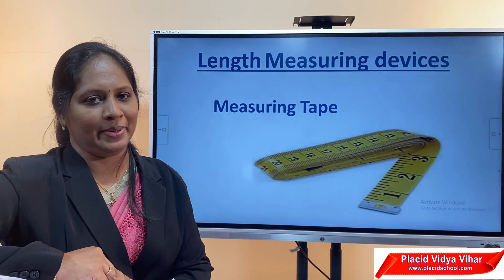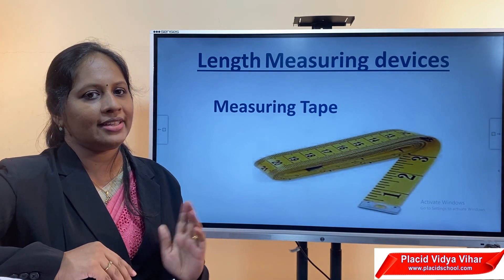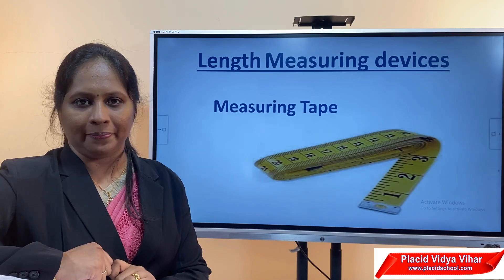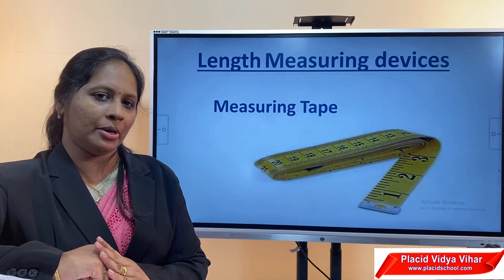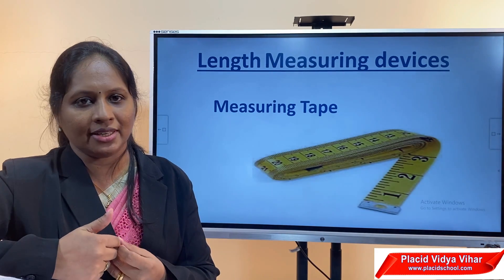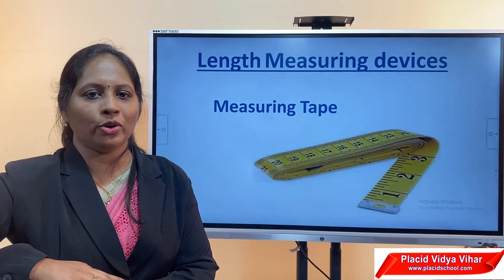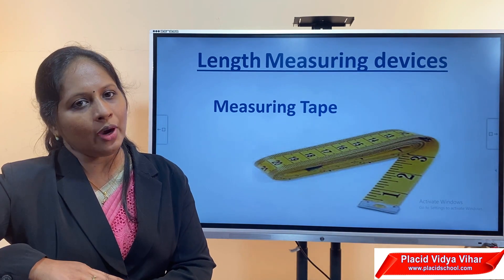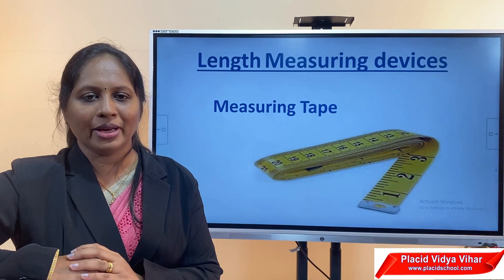This is a measuring tape, which is mainly used by tailors. What is the difference between the meter rod and the measuring tape? The meter rod is very rigid — you cannot bend it. But this measuring tape is flexible. So if you want to take a measurement around your chest or shoulder, we cannot use a meter scale since you cannot bend it, but we can use measuring tape. If you want to measure the girth of a tree, you cannot use a meter rod. Instead, you can use measuring tape.